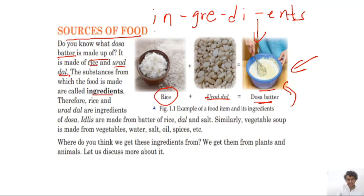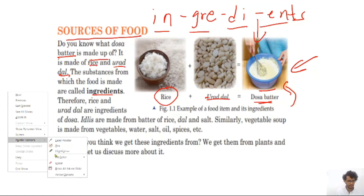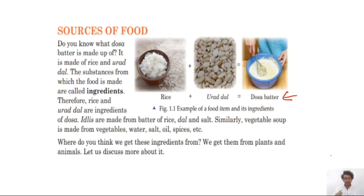The substances from which food is made are called ingredients. This dosa batter is made up of two ingredients. Can you tell me what they are? The ingredients are rice and urad dal — give yourself a high-five if you got that right!